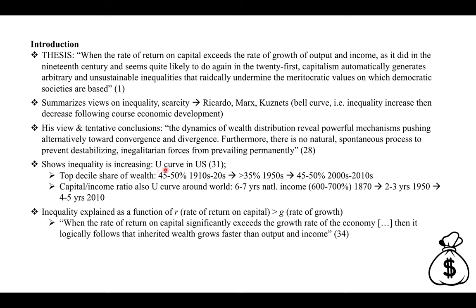He shows the U-curve of increasing inequality. For instance, the top decile share of wealth in the U.S. from the 1910s to the 1920s was between 45 and 50 percent — almost half of national wealth held by the top decile. This decreased dramatically to less than 35 percent in the 1950s, and now in the 2000s and 2010s it's increased again to between 45 to 50 percent. Inequality in the U.S. is particularly extreme, but basically most rich countries around the world display the same patterns.